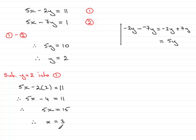So all you need to do now is just summarize your results and just say, therefore, x equals 3 and y equals 2. And that's your solution, then, to this simultaneous equation.